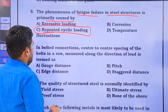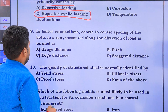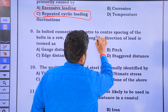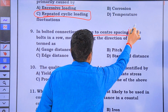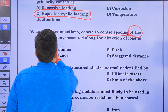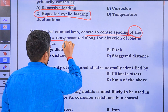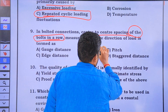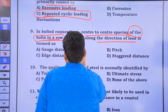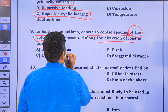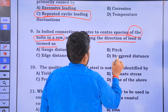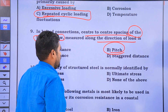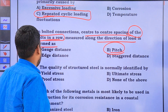In a bolt connection, the center-to-center spacing of the bolt in a row, measured along the direction of the load — this is the main key point — is called the Pitch.